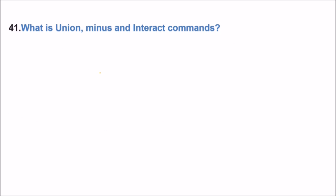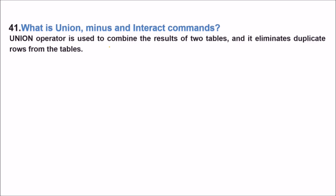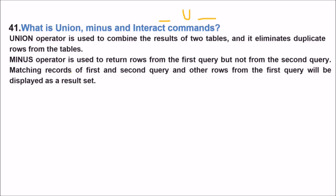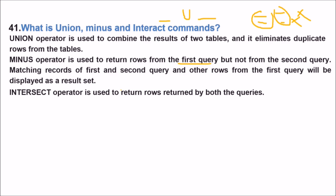What is union, minus and intersect command? UNION operator is used to combine the result of two tables and it eliminates the duplicate also from the tables. MINUS operator is used to return rows from the first query but not from the second query. Matching records of the first and second query and other rows from the first query will only be displayed as a result not from the second table. INTERSECT operator is used to return rows written by both the queries, first query and second query.